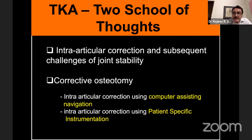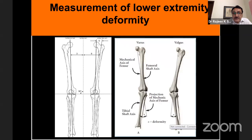What are the two basic ways of correction of extra-articular deformity? One is intra-articular correction and the subsequent challenges of joint stability, which senior faculty will explain in detail. The second aspect is corrective osteotomy — you do the osteotomy distally and make corrections at the deformity level or just proximal or distal to that level.